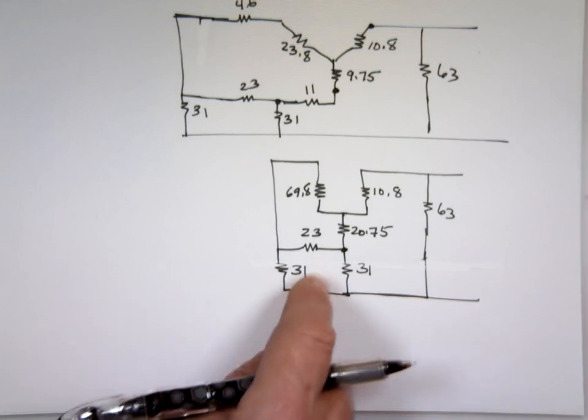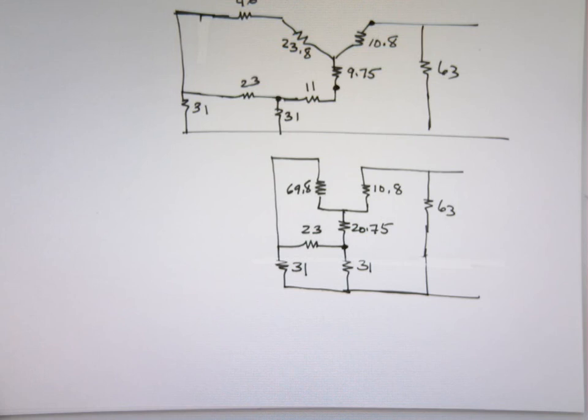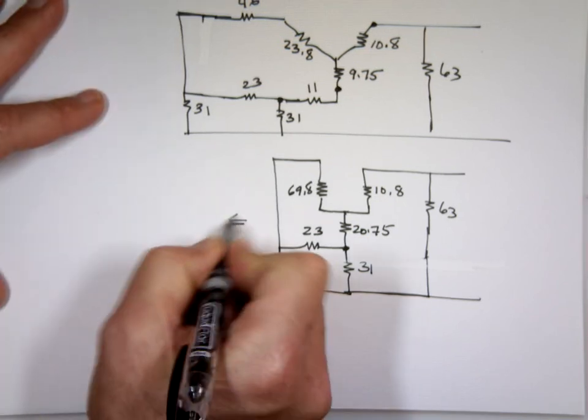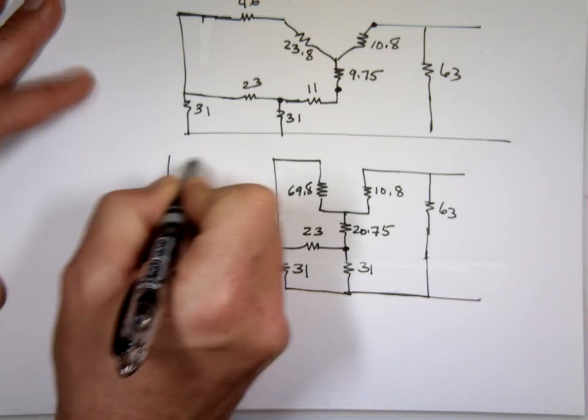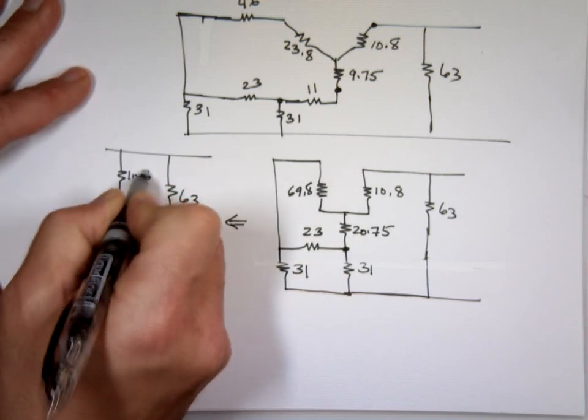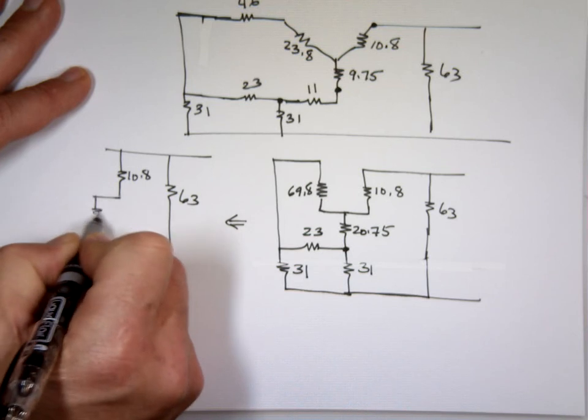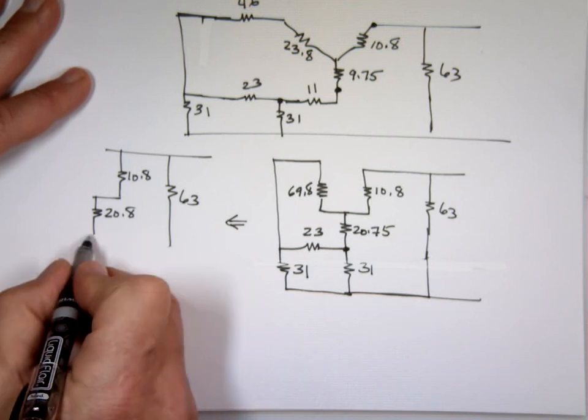Again, this bottom one is deceiving because that's really a delta. Because if you look at that picture, it looks like this. 20.8. I don't know why it was 75. Two decimal places are fine.